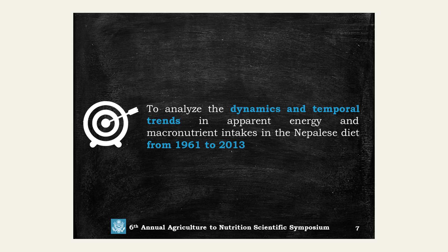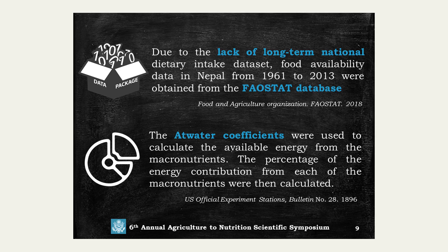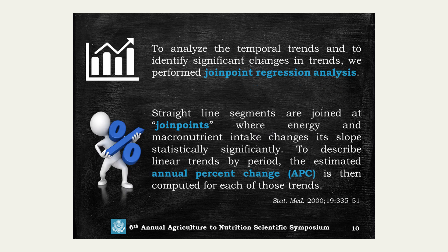With this background, my study was intended to analyze the dynamics and temporal trends in the apparent energy and macronutrient intakes in the Nepalese diet. Due to the lack of long-term national dietary intake data, food availability data of Nepal was extracted from 1961 to 2013, obtained from the FAO STAT database. The Atwater coefficients were used to calculate available energy from macronutrients. To analyze temporal trends, we used joint point regression analysis, carried out using the joint point regression program.